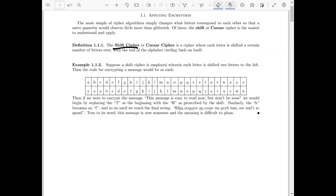For example, if we've got this message, this message is easy to read now, but won't be soon. We take that first letter, that t, and you can see t maps to r. So we just replace that right in there. Next up, we have h, which maps to f. Similarly, i to g. And finally, we've got s maps to q. So we've got that first word fully encrypted, r-f-g-q.